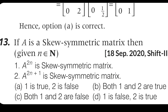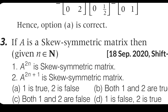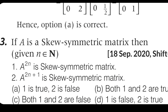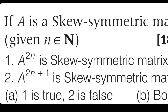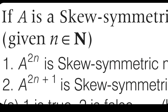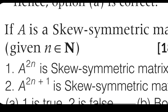If we look at the skew matrix: A transpose equals minus A. Squaring gives a positive value; cubing gives a negative value. For even powers (2n), the result is positive — not skew. For odd powers (2n+1), the result is negative — skew. So first condition is false, second condition is true.